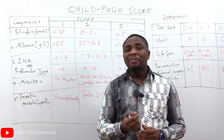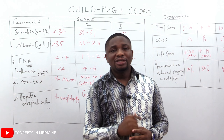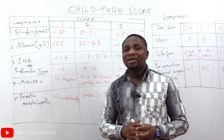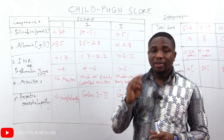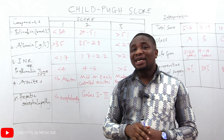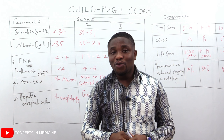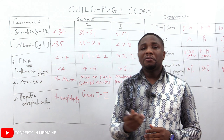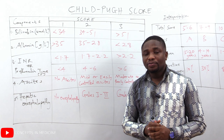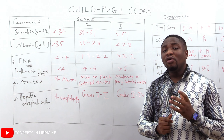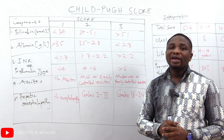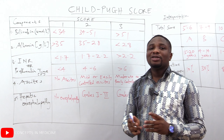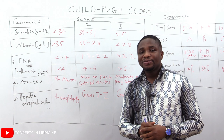The next component is serum albumin, with units in grams per liter. The greater the albumin, the better, because we need albumin to maintain optimal oncotic pressure in the blood vessels, preventing the leakage of fluid into the extravascular space. If serum albumin is greater than 35 g/L, score of one. From 28 to 35 g/L, score of two. Less than 28 g/L, score of three.